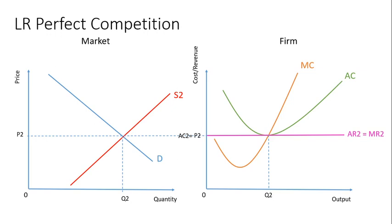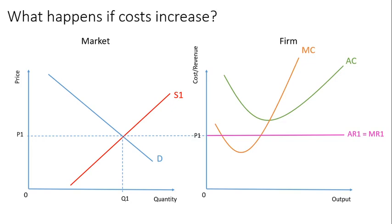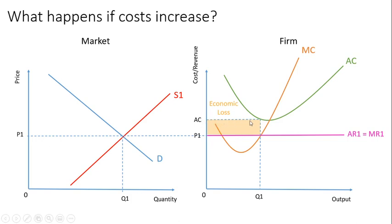You have to be able to interpret what happens if costs change. Say we have an increase in variable costs, shifting up our MC and AC. You can still work the logic: where is profit maximized? Profit is maximized where MC equals MR. The MC crosses MR, you draw up to the AC curve — that's the new average cost. Now the price is below our average cost, so that's an economic loss: we're not making a profit and not even covering our opportunity costs.